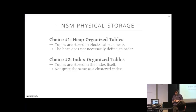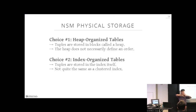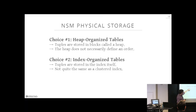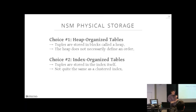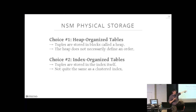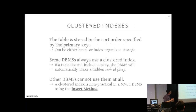There are two design decisions for how to store an NSM database: heap-organized tables and index-organized tables. In a heap-organized table, the data is stored in a separate data pool and may not be sorted on any particular attribute. In an index-organized table, the tuples are stored directly inside the index — the leaves of a B+ tree hold the actual tuples, not pointers to tuples.